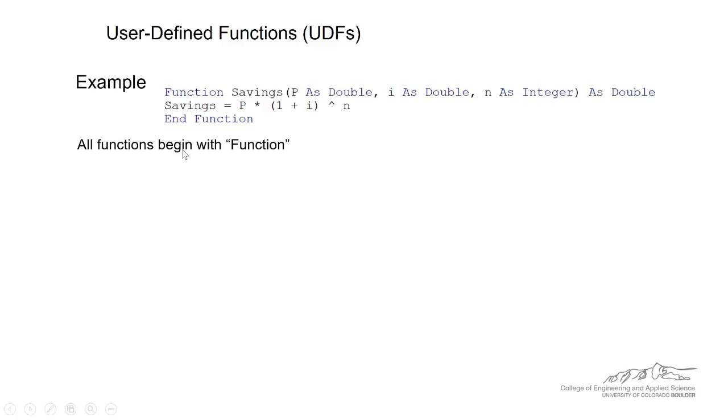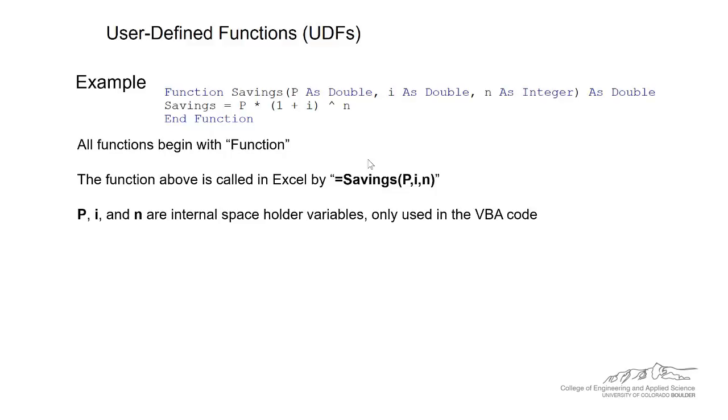So just a little bit of a debrief here on functions. All functions begin with function. The function above in Excel, you call it in Excel by typing in the function. p, i, and n are internal space holder variables when I write this in the editor. They're only used in the VBA code.